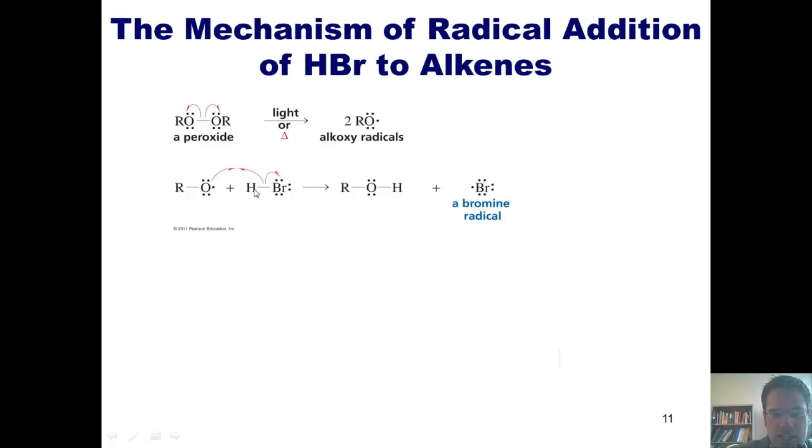These oxygen radicals then react with the HBr. This hydrogen is stealing one of the two electrons in the HBr bond and taking that electron and combining it with this oxygen radical to form an alcohol and produces bromine radical.